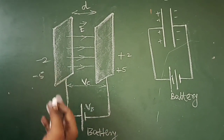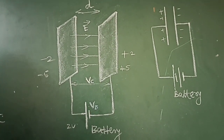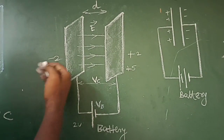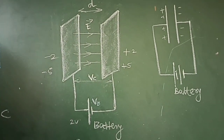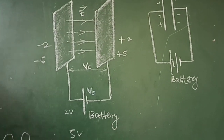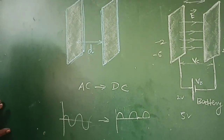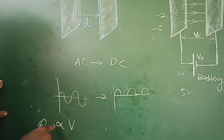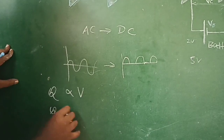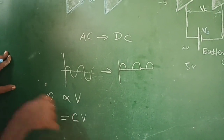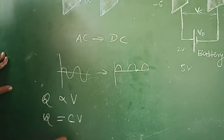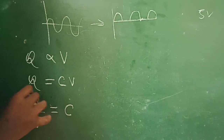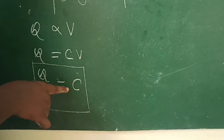As the charge deposited increases and potential increases, we find that charge Q is proportional to voltage V. Applying a physical constant, we write C = Q/V. This is the capacitance.